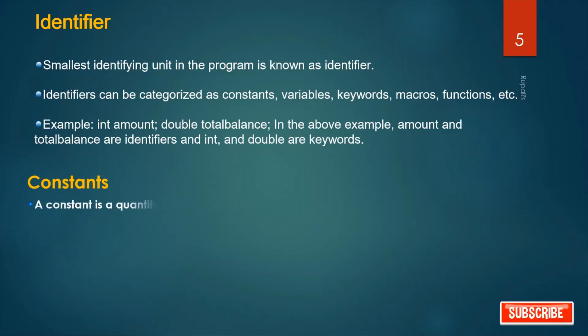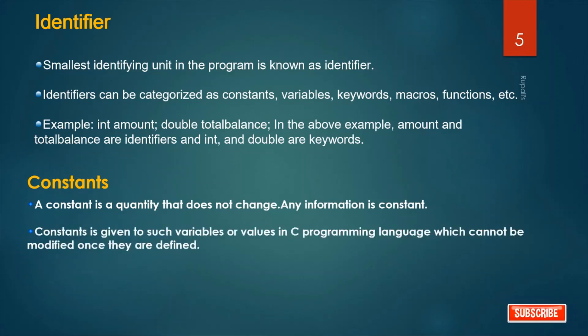A constant is a quantity that does not change. Any information is constant. Constant is given to such variables or values in C programming language which cannot be modified once they are defined. If you define a constant in your program when you are writing, it cannot be modified.